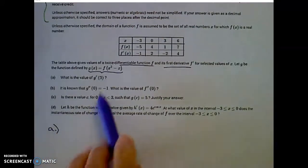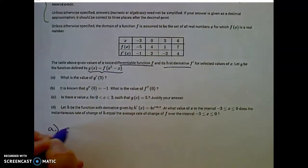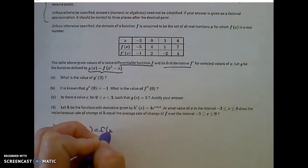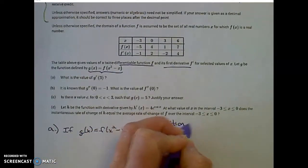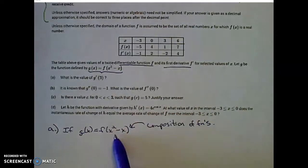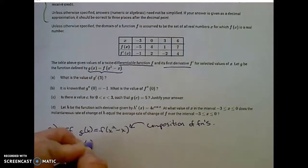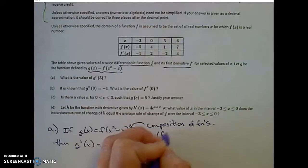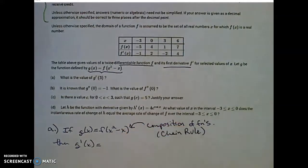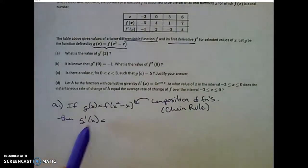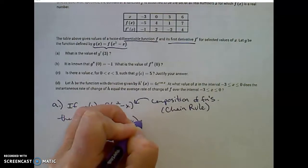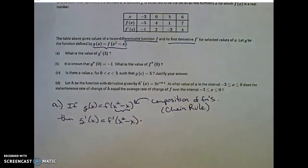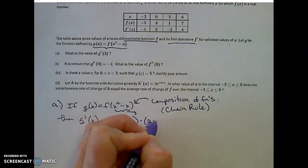For part A, we're asked to find g prime of 3. If we're given g of x is equal to f of x squared minus x, please notice that this is a composition of functions, because I'm plugging the function x squared minus x into the function f of x. When we take the derivative of g of x for this composition of functions, we need a chain rule. So g prime of x will be the derivative of the composed function f prime of x squared minus x, times the derivative of the inner function, which is 2x minus 1.